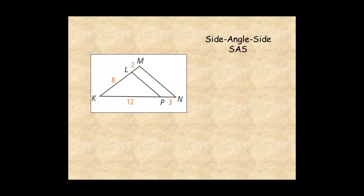If an angle of one triangle is congruent to the angle of another triangle, and the sides that include the angle are proportional, then the triangles are similar. Angle K is shared by both triangles, so the triangles have a congruent angle.